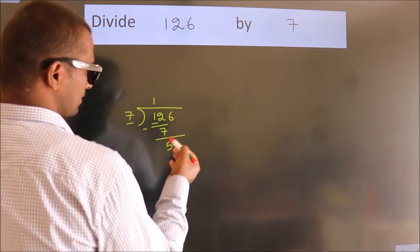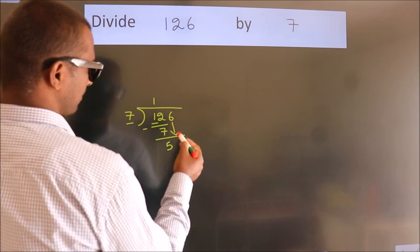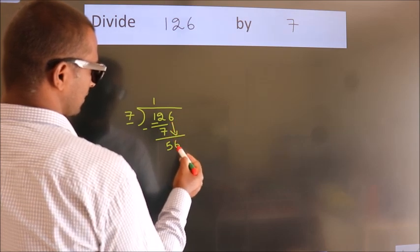After this, bring down the beside number. So 6 down. So 56.